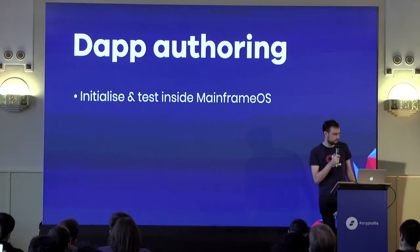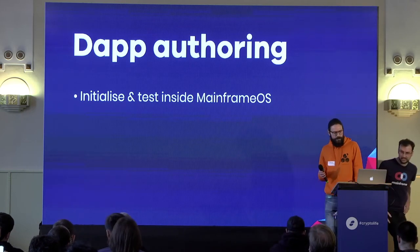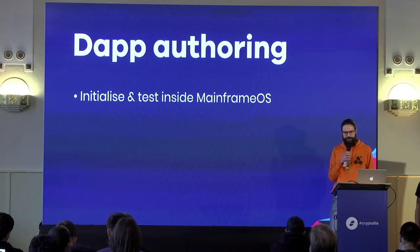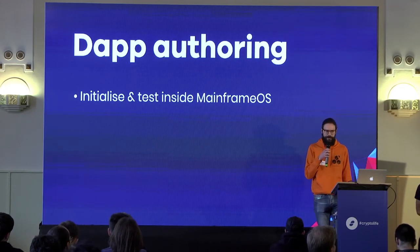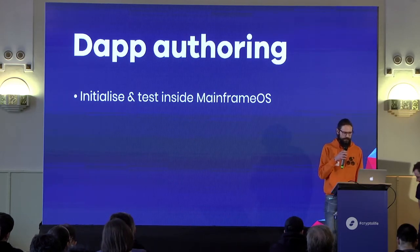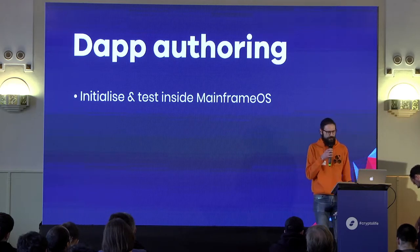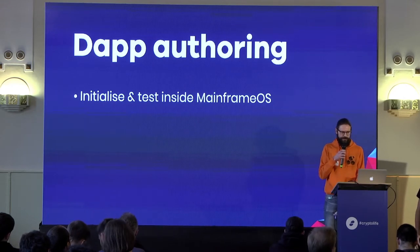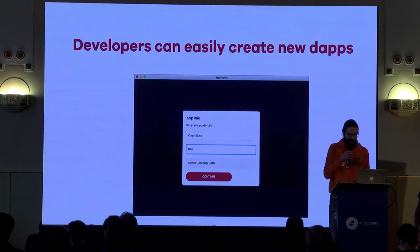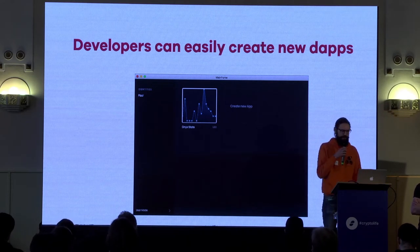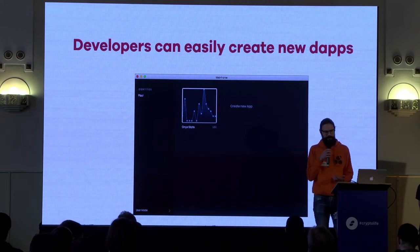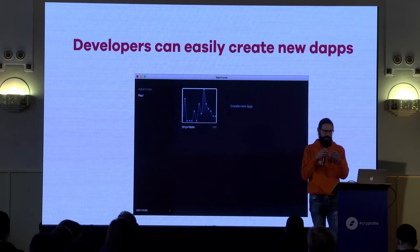We really wanted to make it as simple as possible for developers to open Mainframe OS, create a new DApp, and start hacking away or playing around with the APIs. All of this is handled inside the Mainframe OS application — you can initialize and do all your testing just inside Mainframe OS. When creating an app, you're asked to fill in some metadata about your application and where the source files live. It's then displayed in the developer area where you can run it for testing, get all your debug output, and manage publishing and updates.